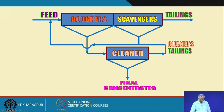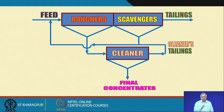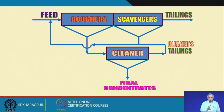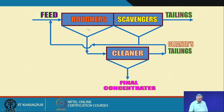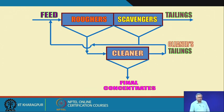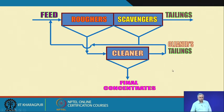The advantage of this arrangement is that in the rougher you can use low-cost chemicals which may not be that selective but will create hydrophobicity on the material surfaces — sacrificing a bit of selectivity. You are trying to reduce the bulk of floatable material so that you only need costly chemicals in the cleaner stages, reducing overall chemical consumption. The overall economics are much more favorable with this rougher-scavenger-cleaner circuit arrangement.